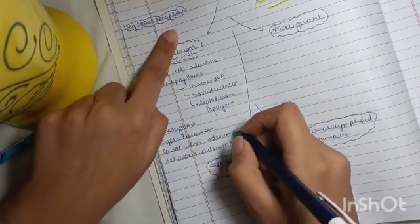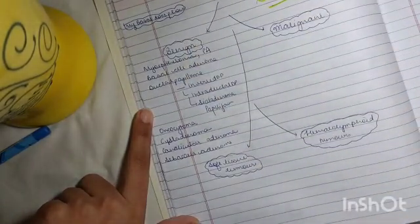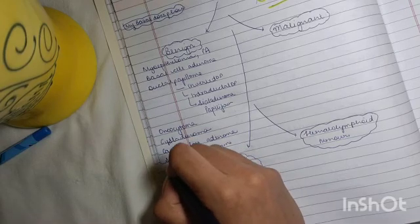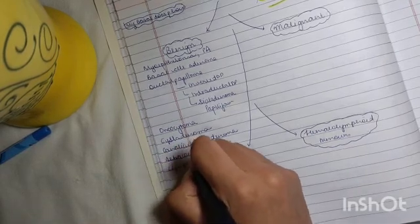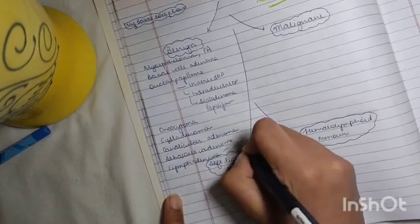Then by 'P,' remember pleomorphic adenoma. Then by 'L,' remember lymphadenoma. Now, lymphadenoma can either be sebaceous or non-sebaceous.